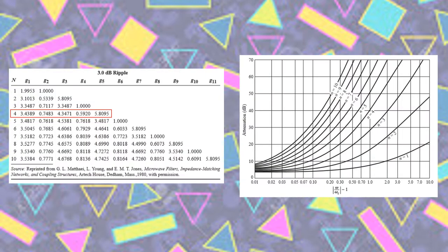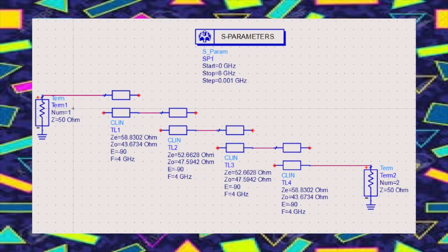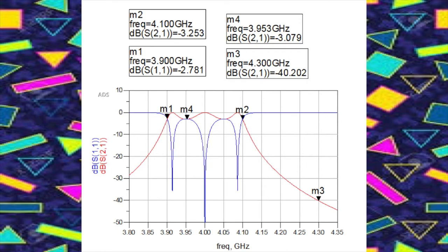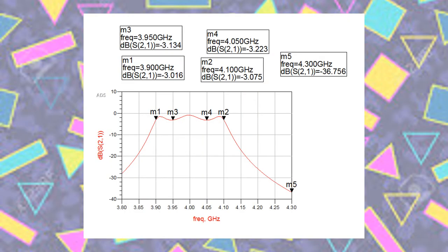To design the filter, Pozar figure 8.27B was used to determine the number of elements required for a given attenuation and cutoff frequency. Table 8.4 was used to determine the element values for the 3 dB ripple filters. We designed the low-pass filter with ideal coupled transmission lines using CLIN in ADS. Shown is the simulated gain and return loss for the ideal transmission line. Using LineCalc, we converted the even and odd impedances into microstrip width, spacing, and lengths, and replaced the ideal transmission lines with coupled microstrip elements MCLIN.